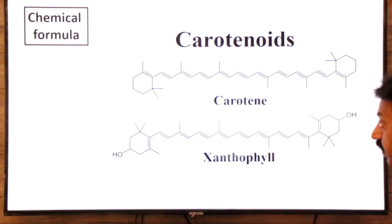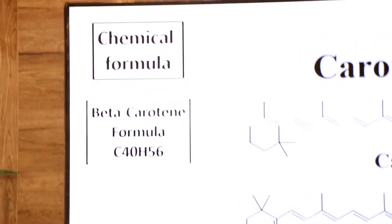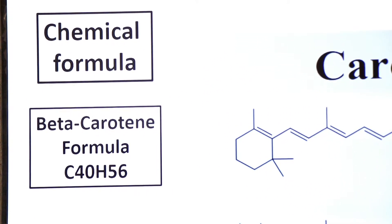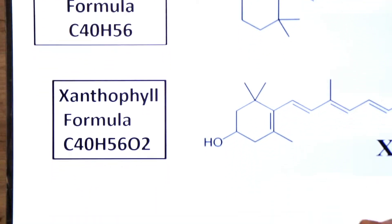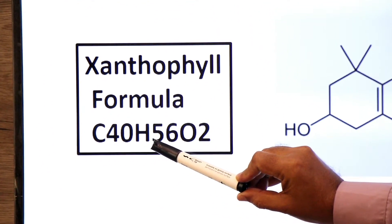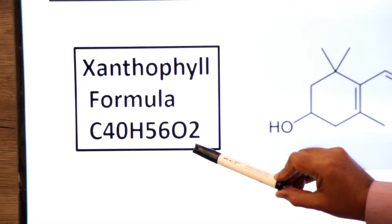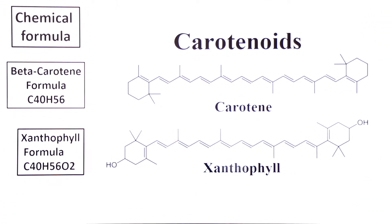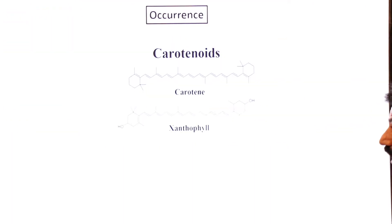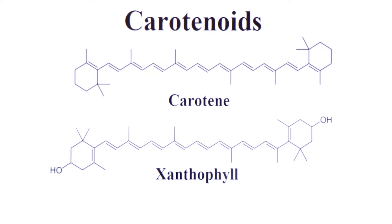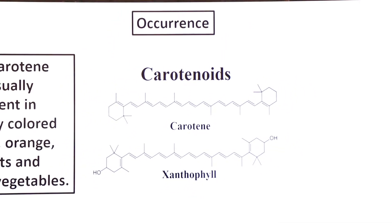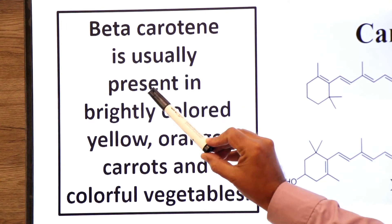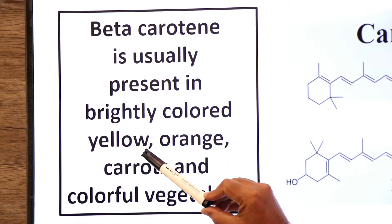Talking about chemical formula: the formula for carotenes is C40H56, while the formula for xanthophylls is C40H56O2. Carotenes are found in yellow-orange carrots and colorful vegetables.